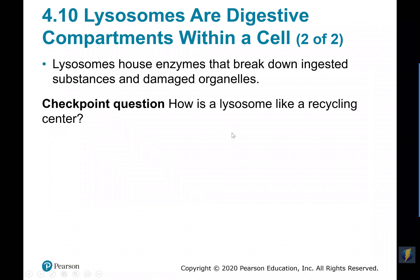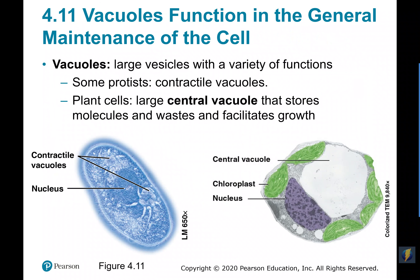Lysosomes are essentially like a recycling center — they're the cleanup crew for our cells. You'll also find vacuoles inside some cells. A lot of protists have little contractile vacuoles which expel water out of them, allowing protists to move. Plant cells tend to have very large central vacuoles that act as a storage area and also help with the growth and development of the plant cell. Contractile vacuoles and central vacuoles are the most common varieties.